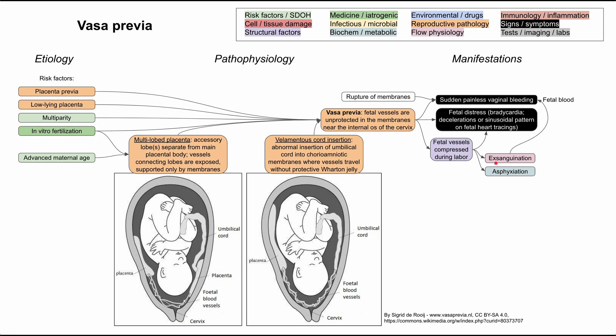Further compression can lead to exsanguination and asphyxiation of the baby. Exsanguination — losing blood — can increase the painless vaginal bleeding, which is painless because it is fetal blood, not the mother's blood. It can also cause anemia in the newborn, so the baby can be born pale. In very severe cases, this can lead to fetal death, which is why it's important to identify and treat vasa previa if possible.